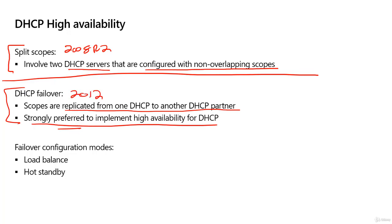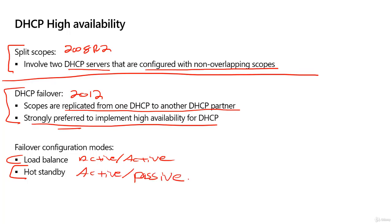DHCP failover is straightforward to configure and offers two modes. One is load balance mode, where both servers are active at the same time and both lease IP addresses — this is also referred to as active-active. The other is hot standby, where one server leases addresses and the other has a replica of that scope, stays up to date, but remains in passive mode. Only if the active server goes offline does the hot standby step in — this is active-passive, where one server is working and the other is waiting for a failure so it can serve clients.